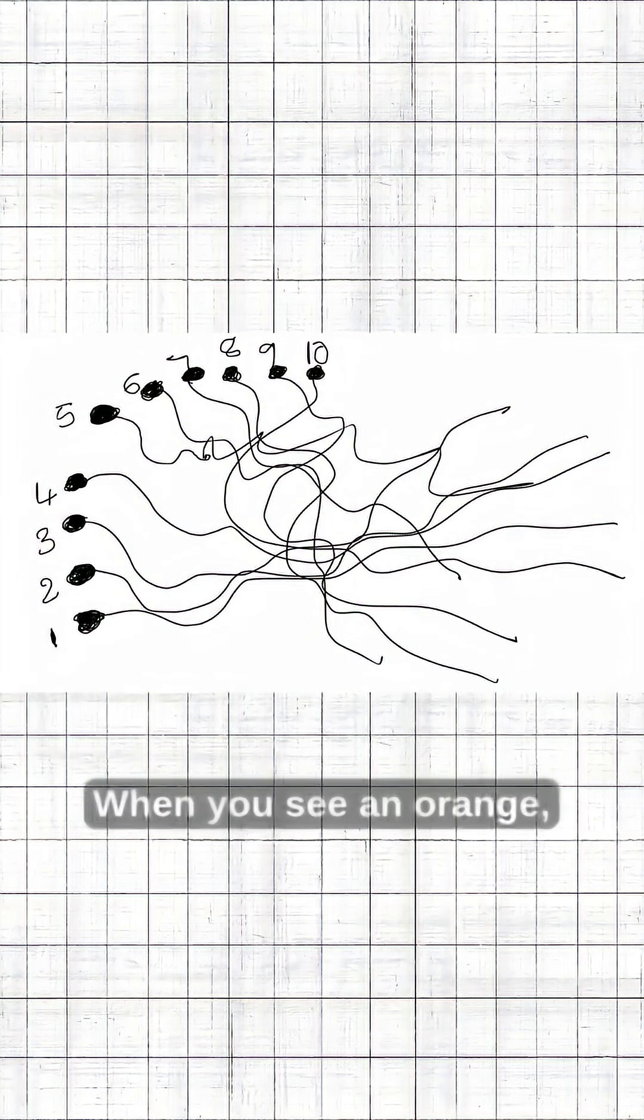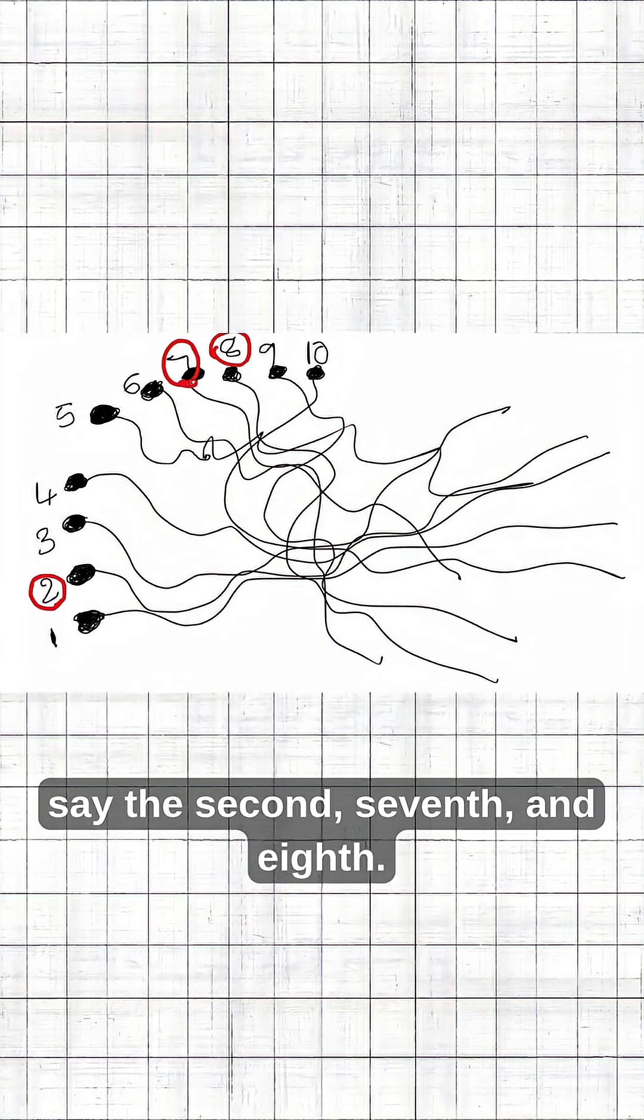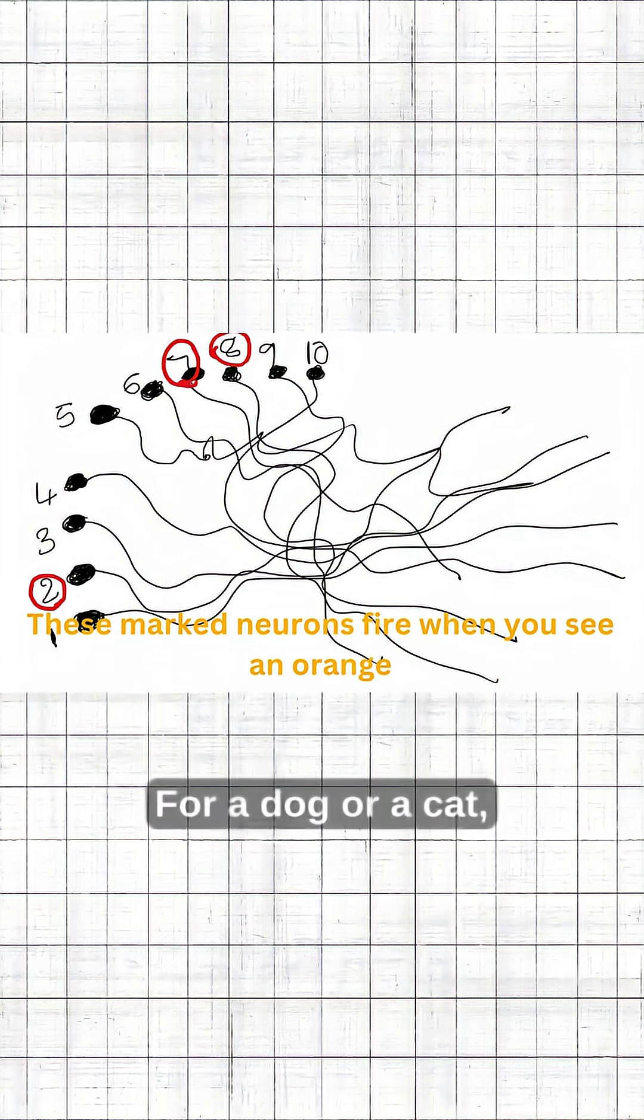When you see an orange, a different set of neurons fire, say the second, seventh, and eighth. For a dog or a cat, it's yet another set of neurons.